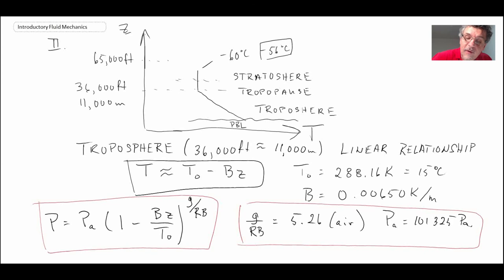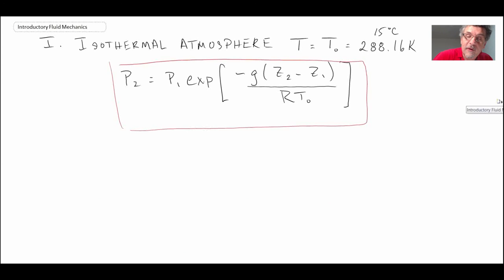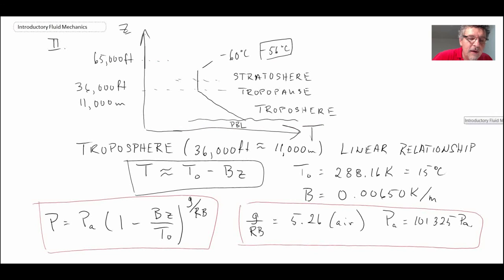So two different relationships. The first one we had was if we had an isothermal atmosphere, you can use that. And if you're in the troposphere, below the tropopause, you can use this relationship here to estimate the pressure of the atmosphere as you go up. And so those are two cases of looking at hydrostatic pressure distribution for a gas. And in this case, we've looked at air and our atmosphere.